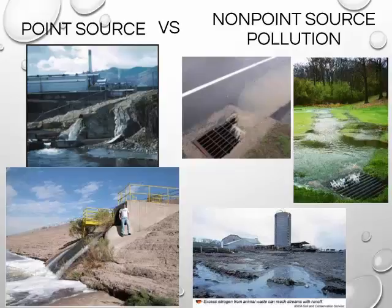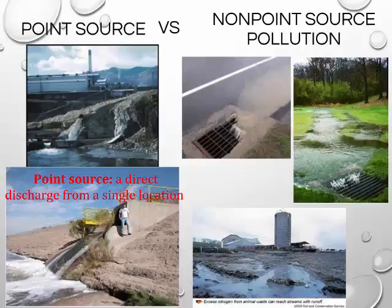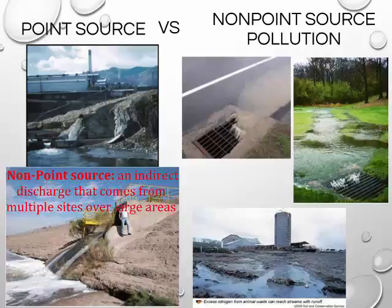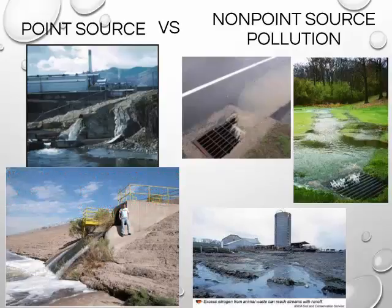Freshwater pollution can come from either point sources or nonpoint sources. Point source pollution is a direct discharge from a single location. Examples include industrial waste discharges and wastewater treatment plant discharges. Nonpoint source pollution is an indirect discharge that comes from multiple sites over large areas. Examples include pesticides from lawns, fertilizer or animal waste runoff from farms, and oil and stormwater runoff from city streets.